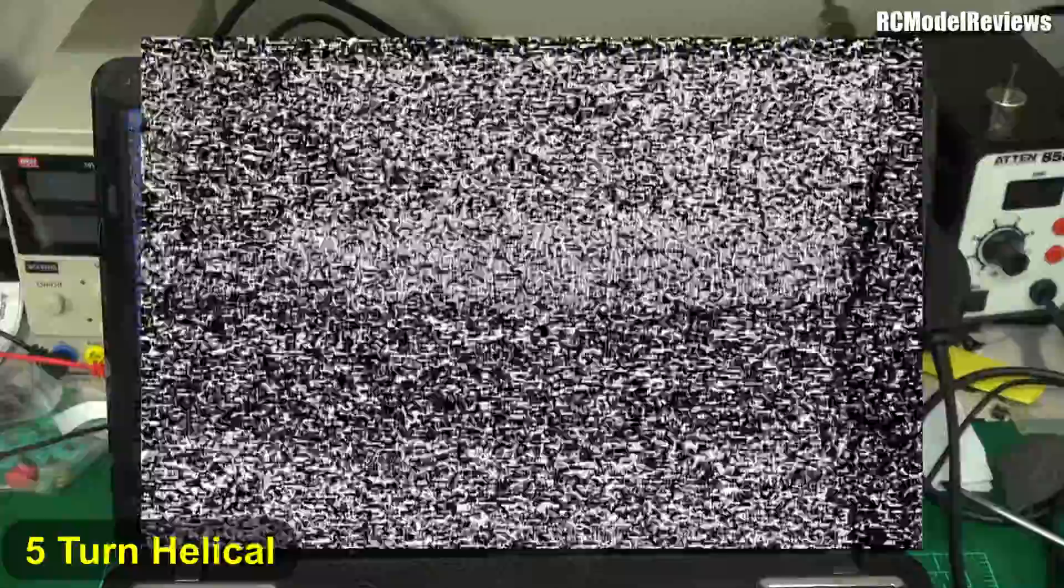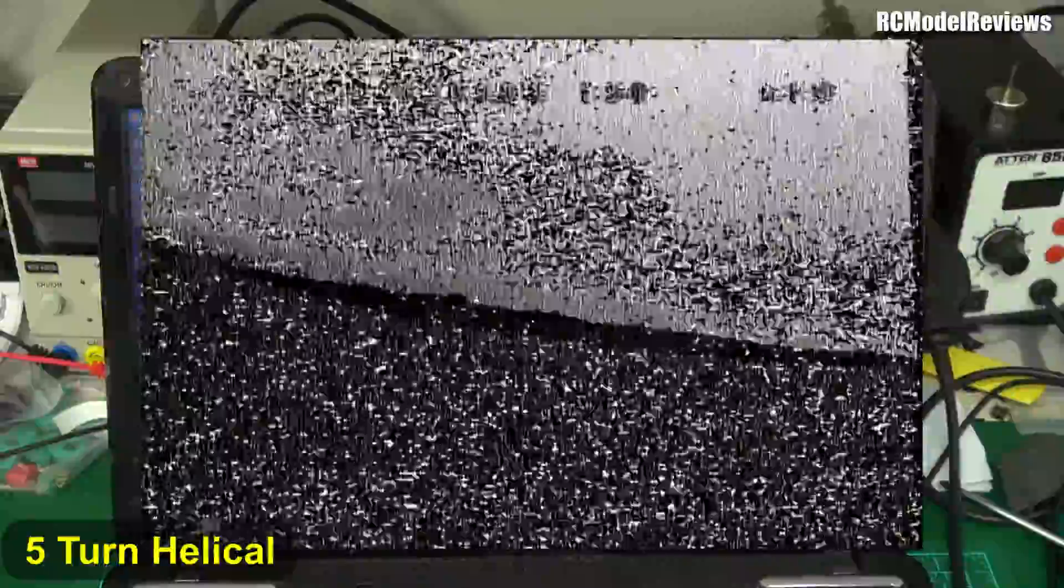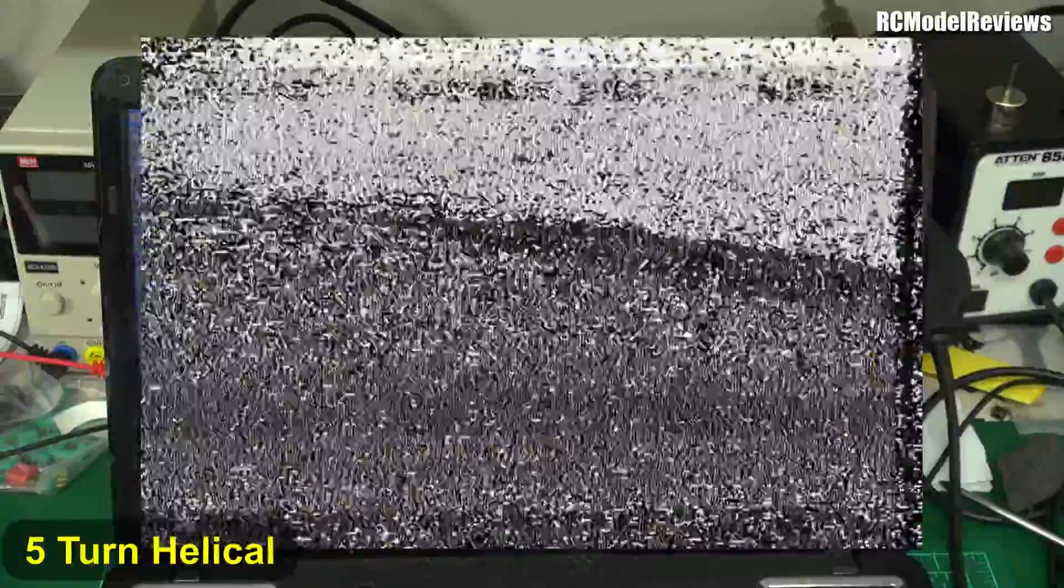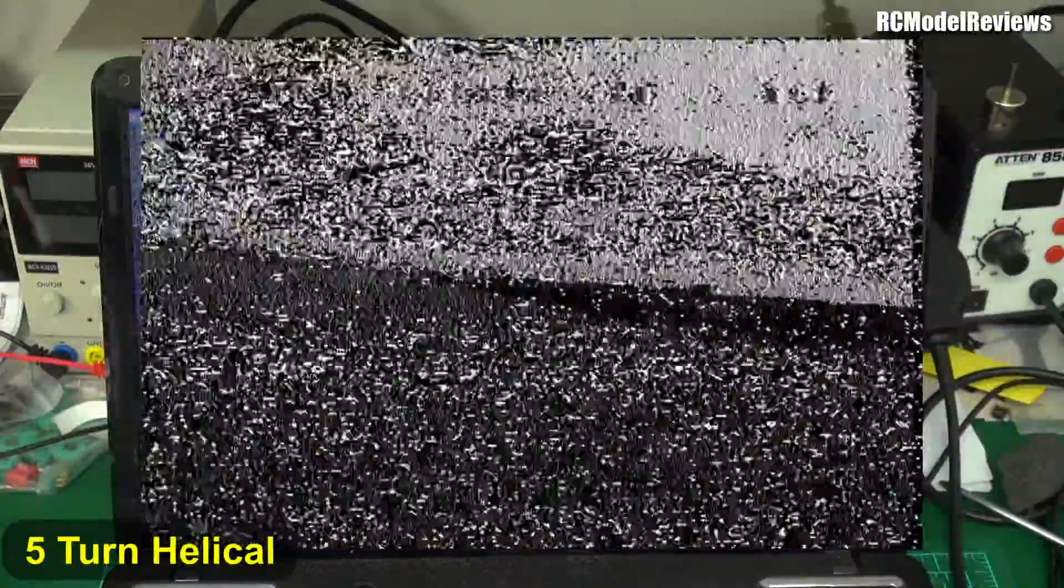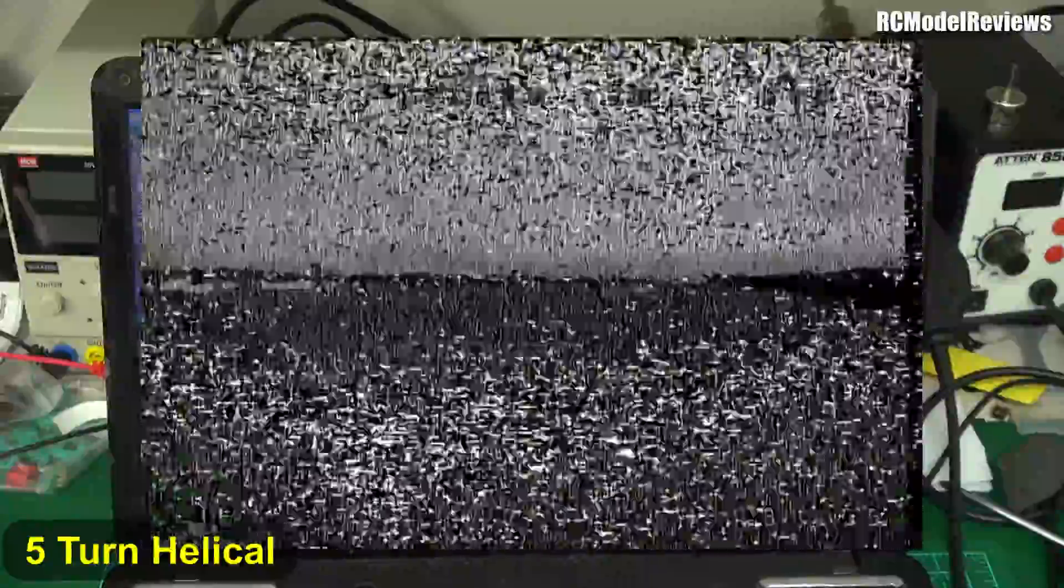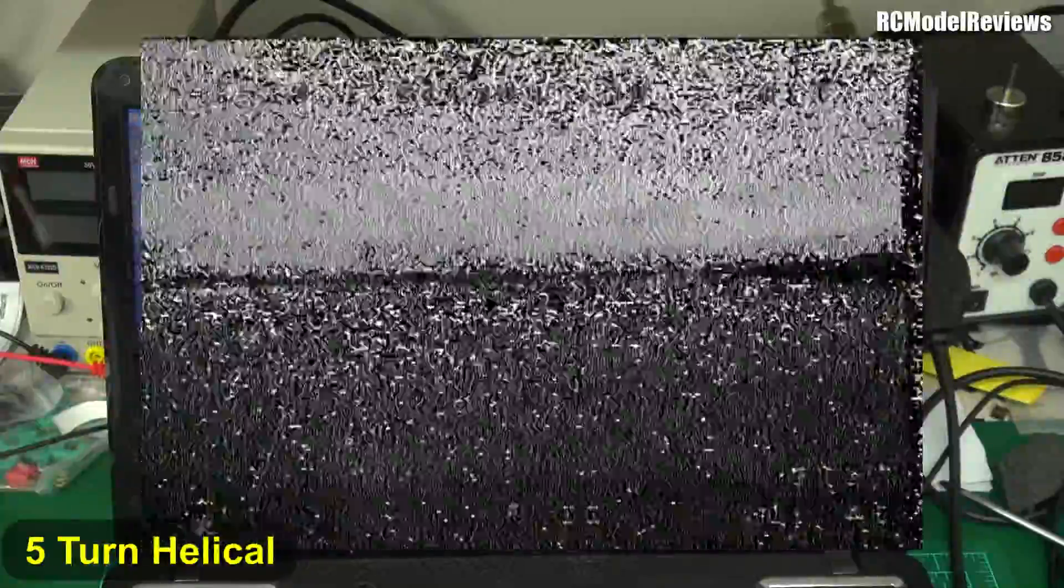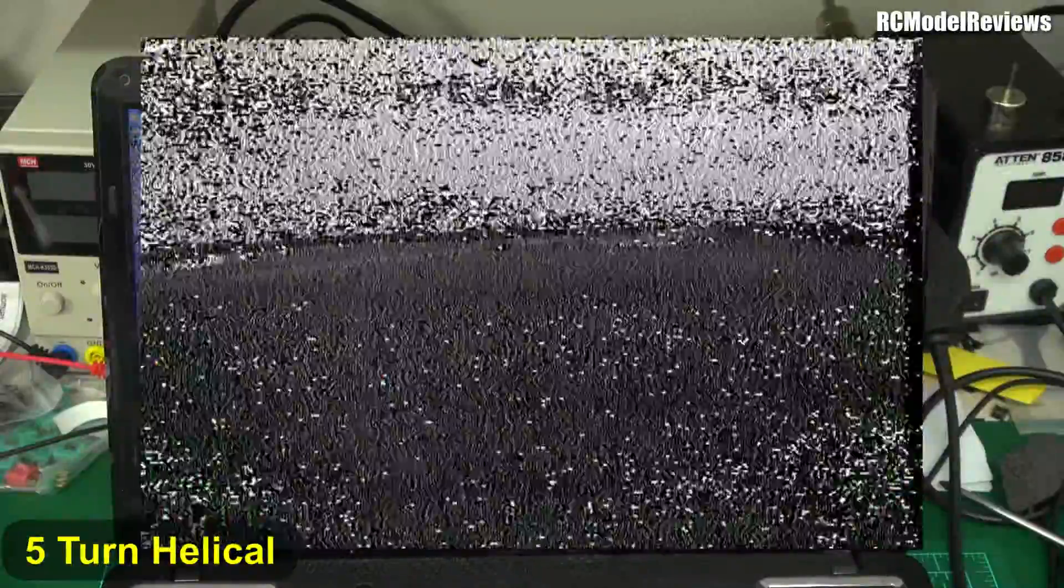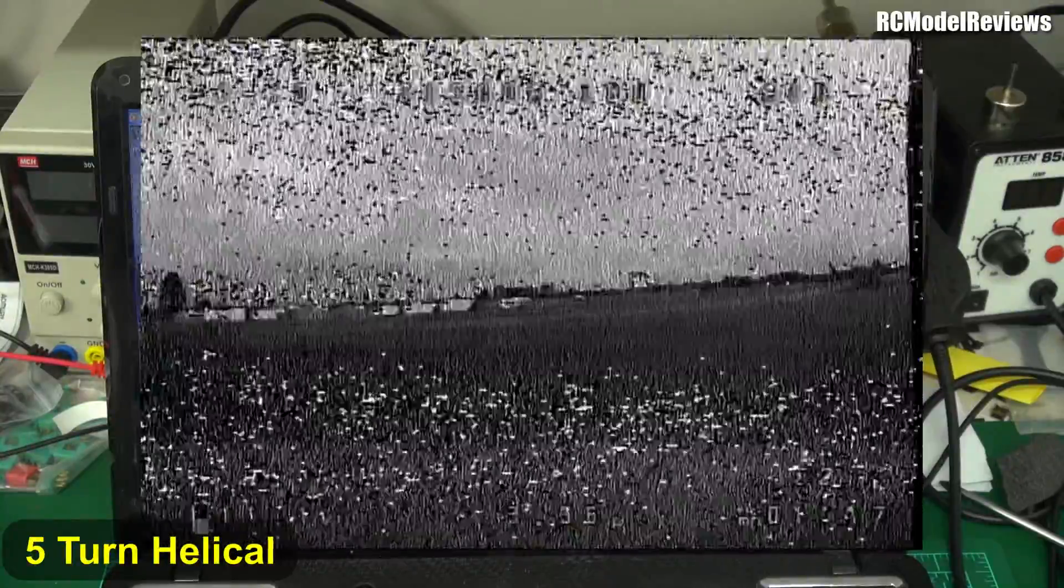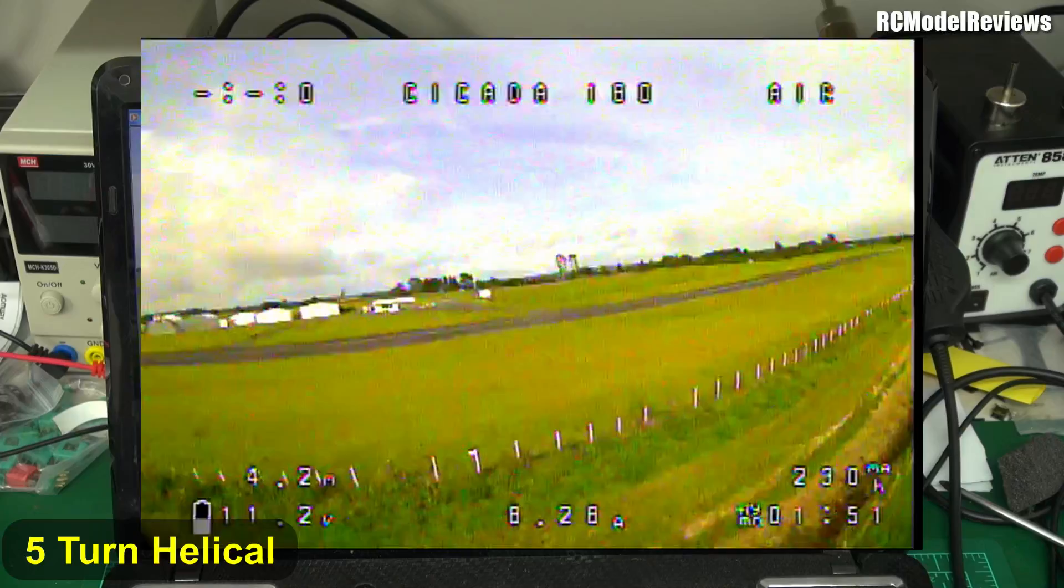I'm going to fly out over that paddock to get us an idea of the beam width. Out over the paddock when I'm sort of at right angles to the antenna there's virtually no signal, you couldn't fly that at all. That's where your omni would come in handy. But I'm coming around now and I'll start heading back towards the runway. We'll just see when the picture improves enough to be flyable. It's starting to improve, we're starting to get some color back.